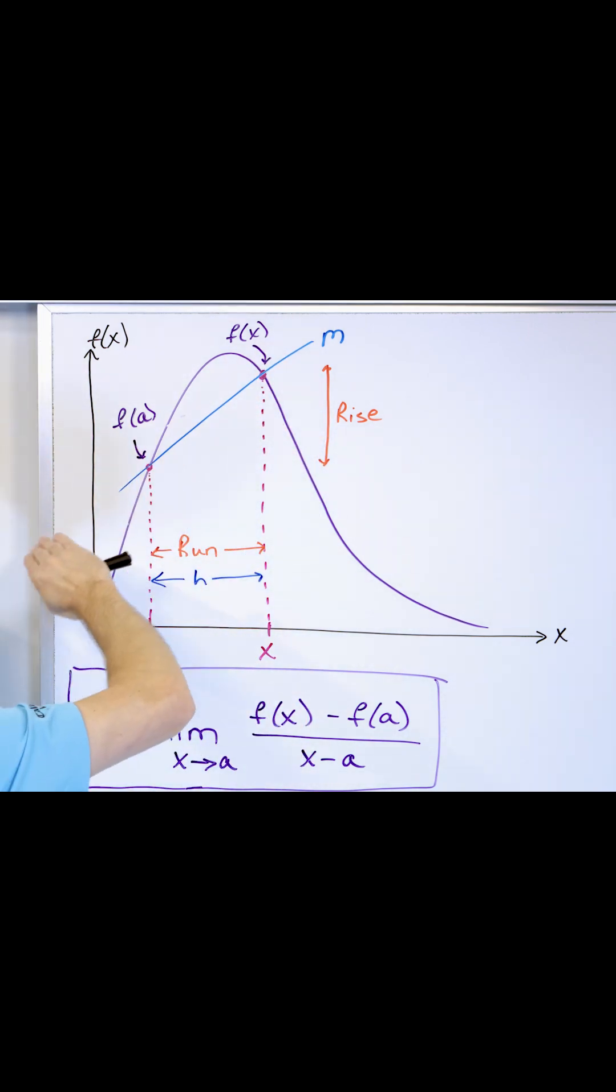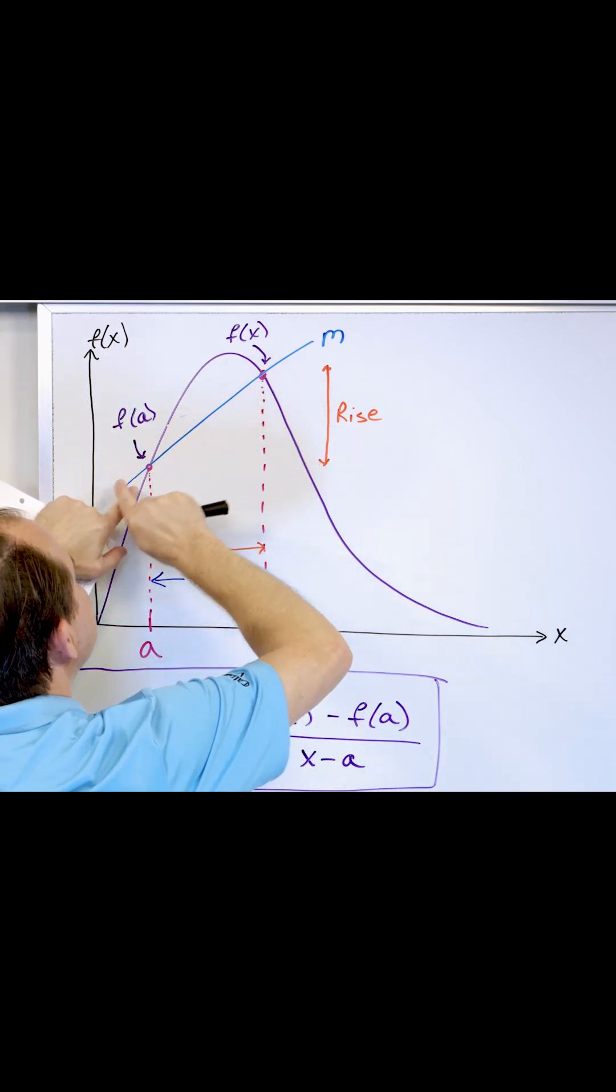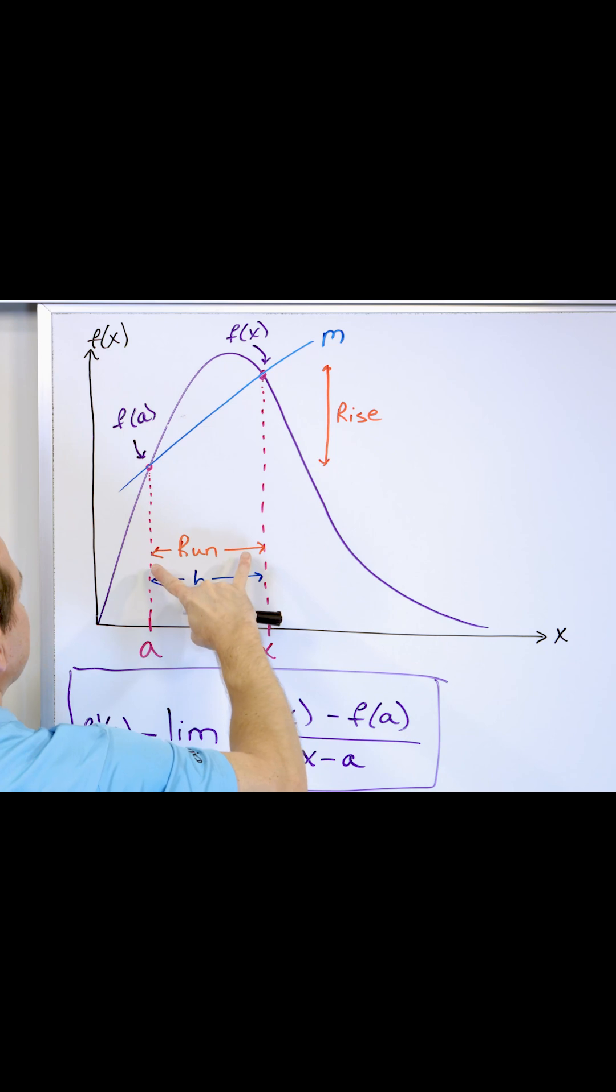And if you want to figure out the crude approximation of the slope, you find the slope of the line through those points. Rise over run right here.